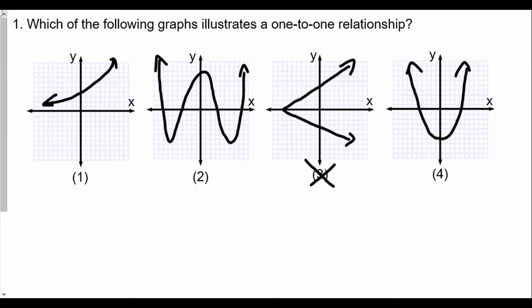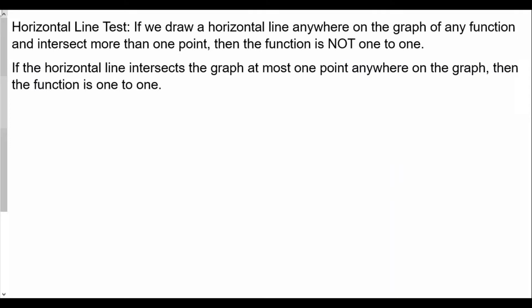Going back to our question: number three is not a function because an x value has more than one y value, so it fails the vertical line test. Now, is there a test to see whether or not a function is one-to-one? Yes — the horizontal line test. If we draw a horizontal line anywhere in the graph and it intersects more than one point, then the function is not one-to-one. If it intersects at most one point anywhere, then the function is one-to-one. It must pass both the vertical line test and the horizontal line test.